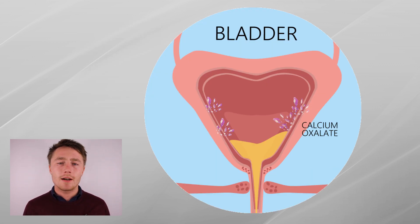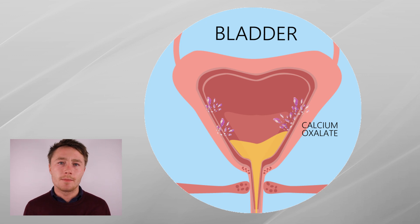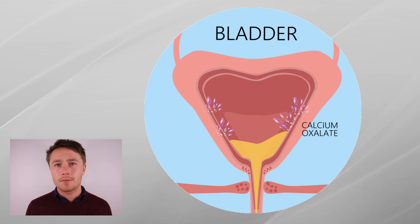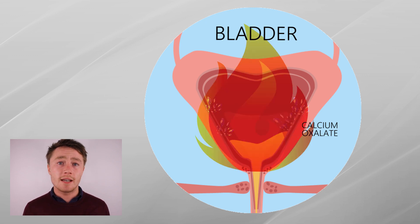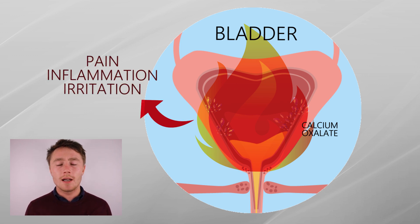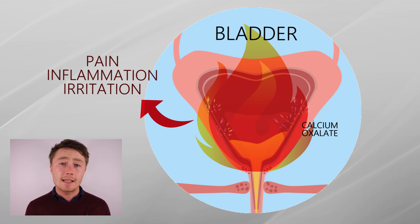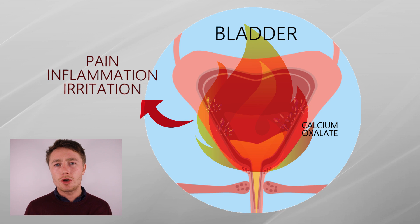Calcium oxalate is not only implicated in kidney stones — those oxalate crystals can actually make their way to other parts of the urinary tract and get into the bladder. Calcium oxalate crystals have the uncanny ability to adhere to epithelial cells, which are what line the bladder and the mucous membranes. When calcium oxalate adheres to or becomes deposited in a tissue, it causes inflammation, oxidative stress, and irritation. It's therefore possible that the bladder pain and irritation experienced in interstitial cystitis could very well be caused by oxalate crystal adhesion to the epithelial tissue lining the bladder.